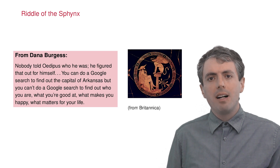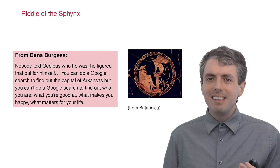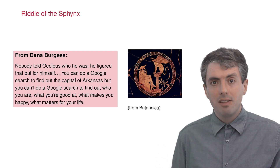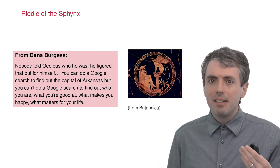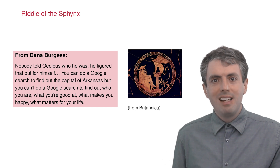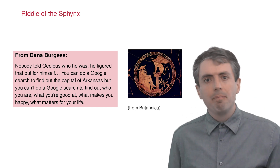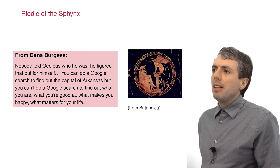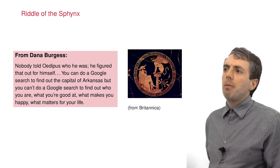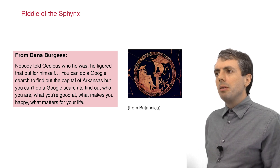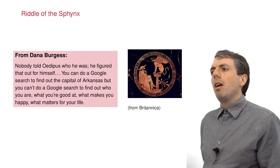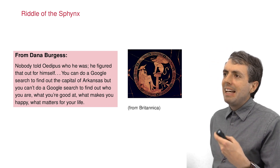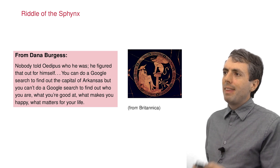By answering the question correctly, Oedipus revealed that he was smarter than the average bear and also unlocked secrets from his own past. In a commencement address to Whitman College, Dana Burgess explained how this differs from the way Google answers questions. You can do a Google search to find out the capital of Arkansas — Little Rock — but you can't do a Google search to find out who you are, what you're good at, what makes you happy, what matters for your life. Information retrieval isn't any help with that.